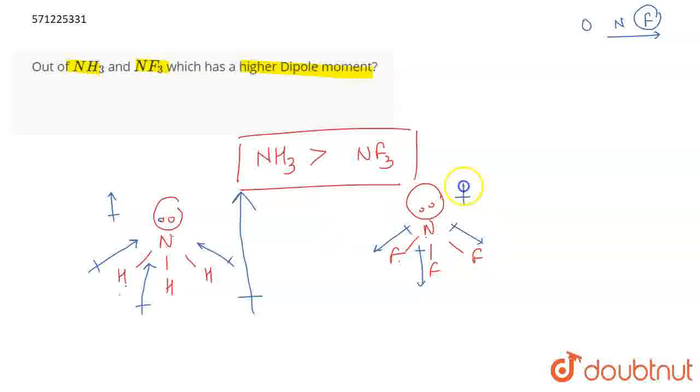But as we said that the lone pair has a dipole moment in the upward direction. So what is going to happen? This is going to cancel out to some extent. This actually has a dipole moment of nearly 0.24 debye.